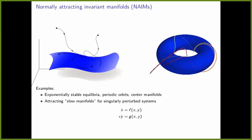Another important example are attracting slow manifolds for singularly perturbed systems. A system is singularly perturbed when there's a small parameter epsilon multiplying the Y-dot term. When epsilon becomes zero, the ODE degenerates into a differential algebraic equation. Systems like that are a common source of NIMs.